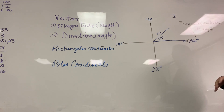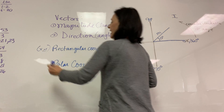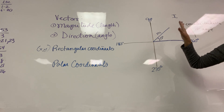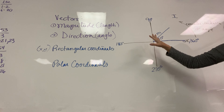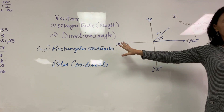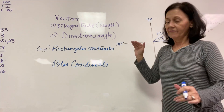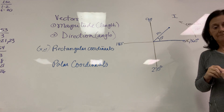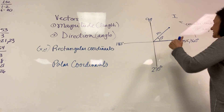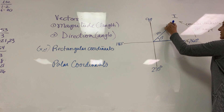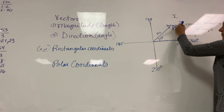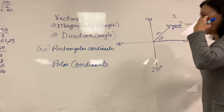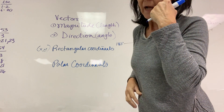Rectangular coordinates are really the x, y. This is really the rectangular coordinate system — the Cartesian coordinate system is actually called the rectangular coordinate system. We're going to think x and y as the coordinate of where that vector ends. The very end of the vector is called the terminal point, so it has an x and a y.